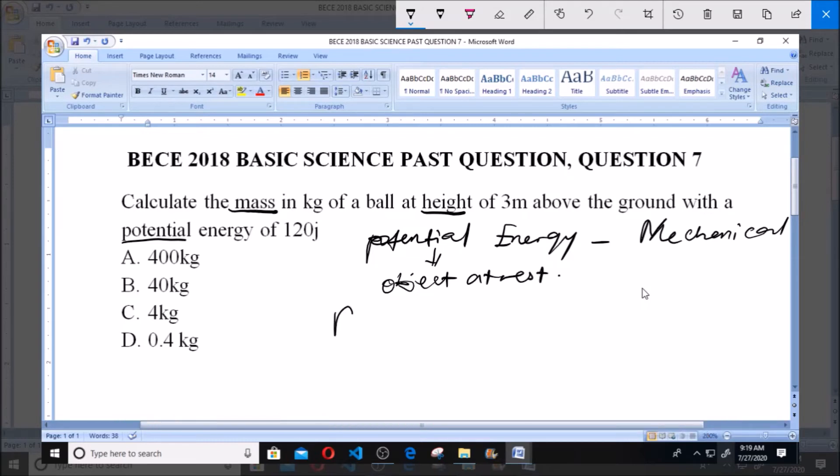So, potential energy, which is PE, is mass times gravity, acceleration due to gravity, times the height, which is MGH.